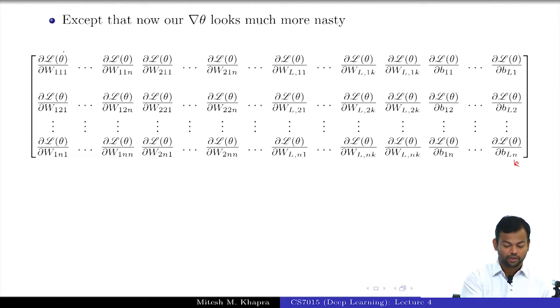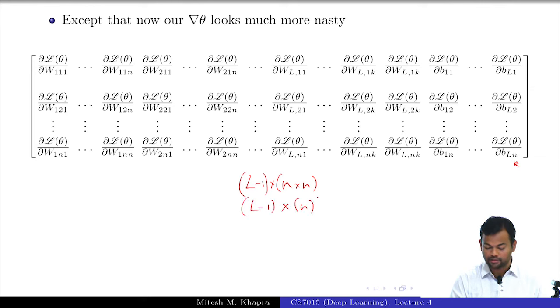Earlier you just had 2 parameters; now you have n×n plus n×n up to L. You have L into n×n plus L into n—that many number of parameters. You have L-1 layers, each of which has n×n parameters, and L-1 layers which also have the biases. Then the output layer: one layer which has n×k parameters and k×1 bias.